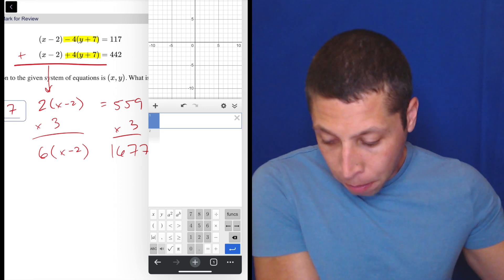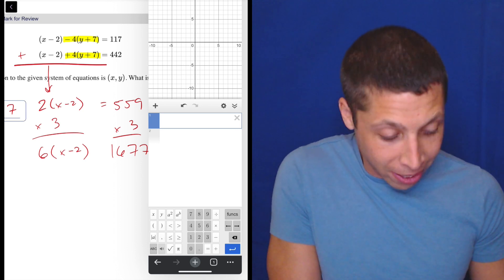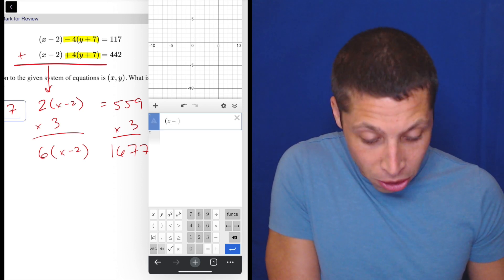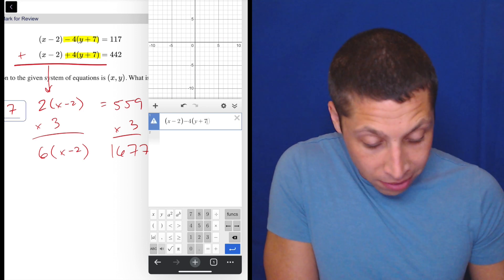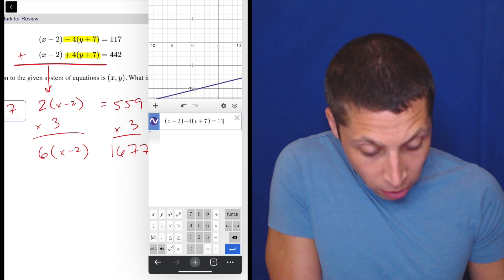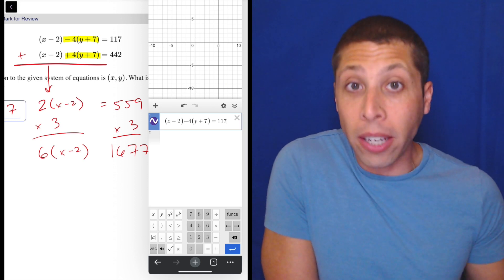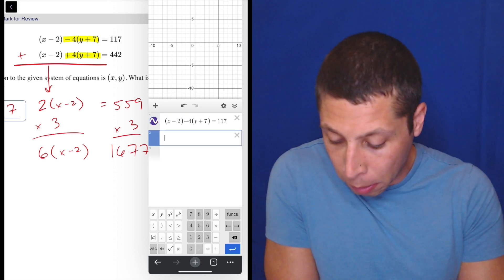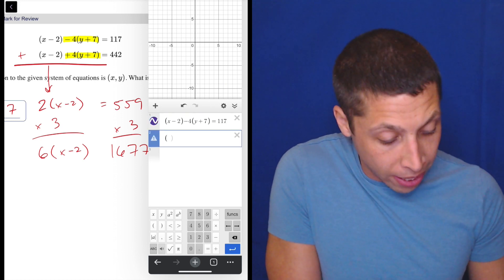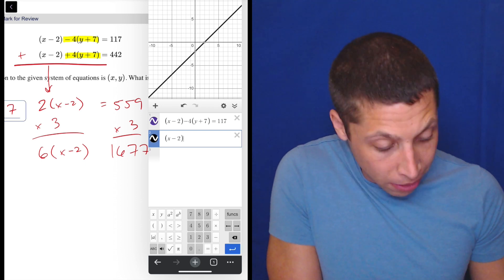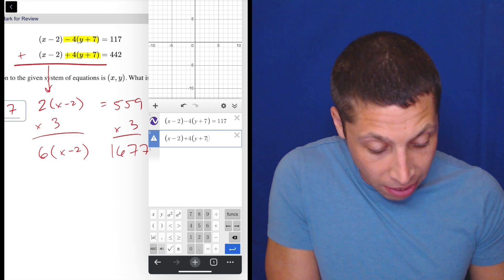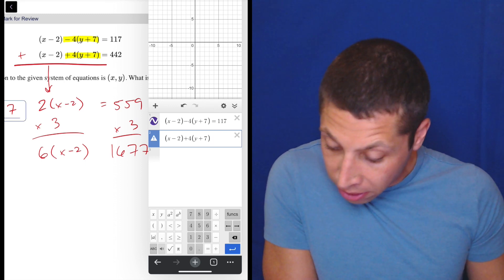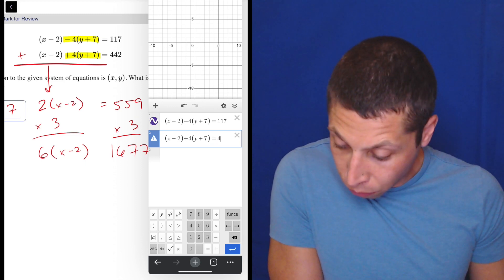I'm going to use my keyboard here. I'm very excited about this. So (x - 2) minus 4 times (y + 7), and that is equal to 117. So it's drawing a line here. It's not on the screen, but it's okay. We'll worry about that later. And then we have, again, (x - 2) plus 4 times (y + 7). So you can see this is where you're losing time, is the typing. Equals 442.